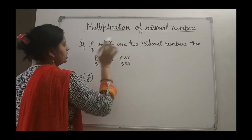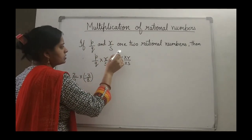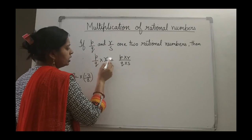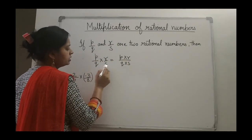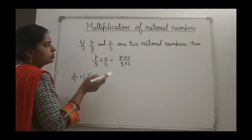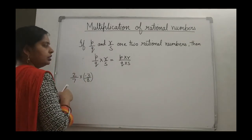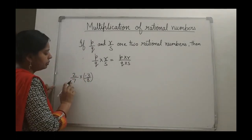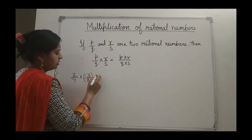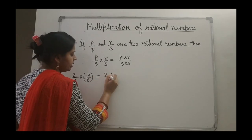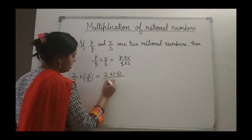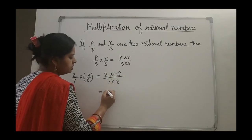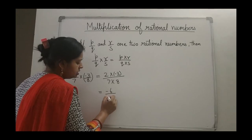Now the next topic is multiplication of rational numbers. If P upon Q and R upon S are two rational numbers, then P upon Q multiplied by R upon S: numerators are multiplied by numerators and denominators by denominators. If you are getting negative numbers then we have to follow the integer law also. For example, 2 upon 7 multiplied by minus 3 upon 8: 2 multiplied by minus 3, and 7 multiplied by 8. So 3 twos are 6 — minus 6 upon 56.